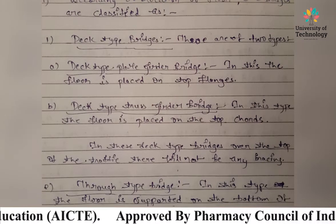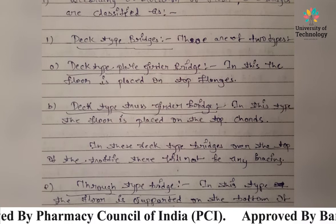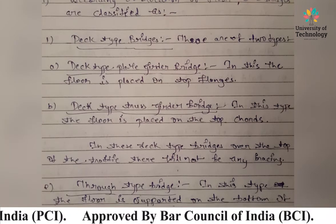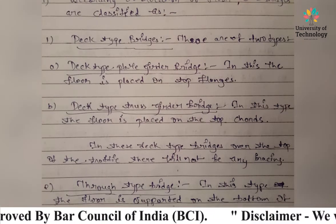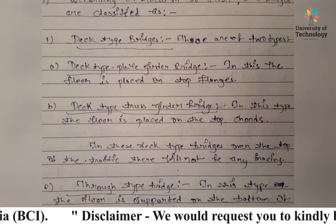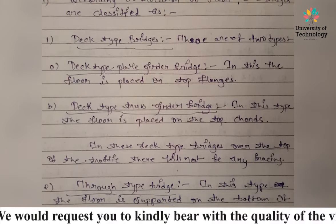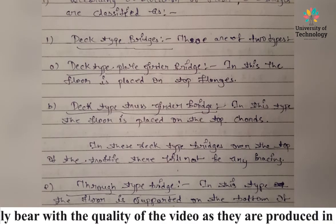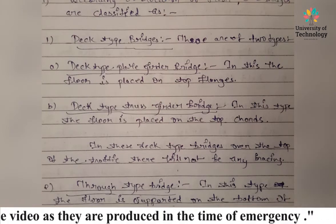One important note about deck type bridges: over the top of the traffic there will be no overhead bracing. In a deck type bridge, bracing is only provided at the bottom. There is no bracing on the upper side.